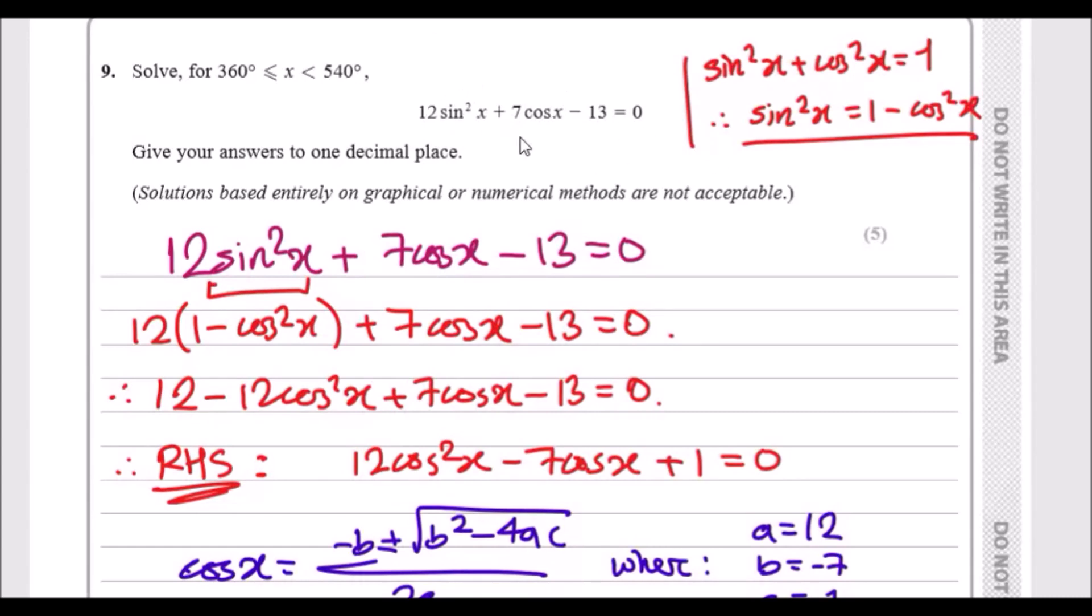Give your answers to 1 decimal place. Now one thing I want you to know: every time you do these types of questions, always write down your identities that you think are relevant. Typically there's two here: you have sine squared x plus cos squared x equals one.